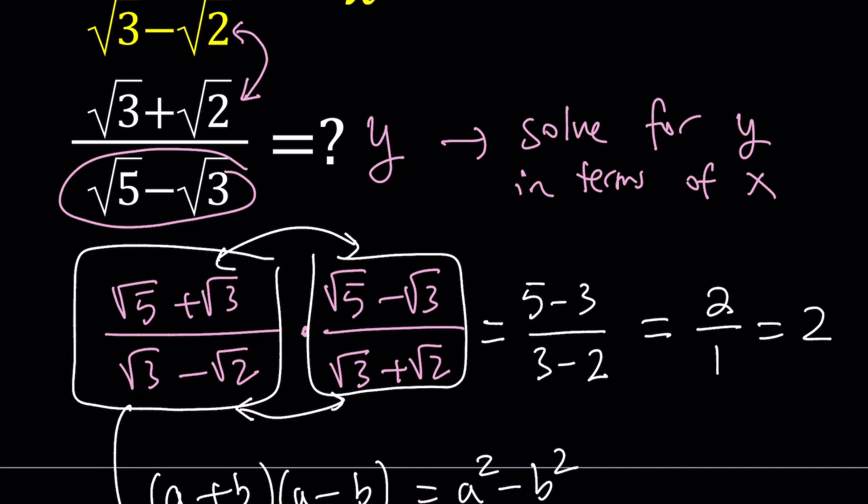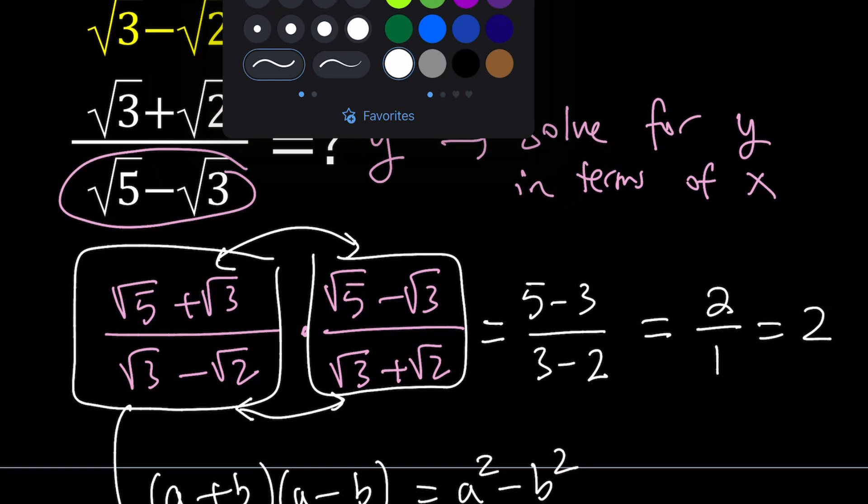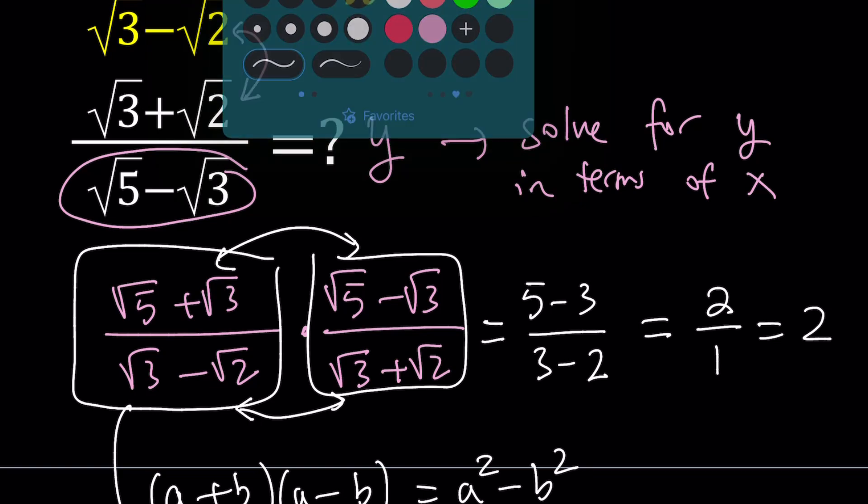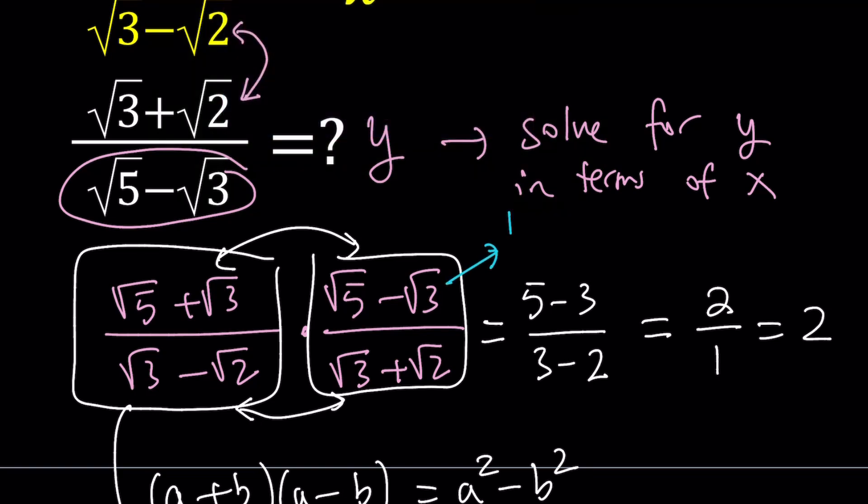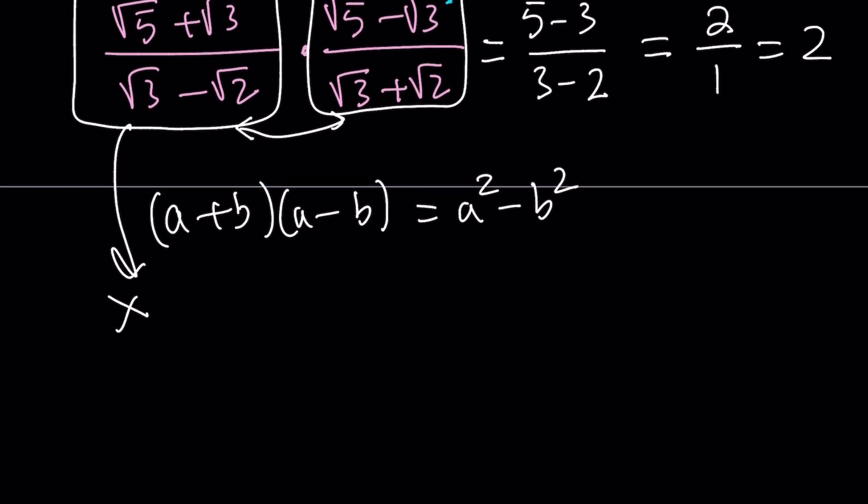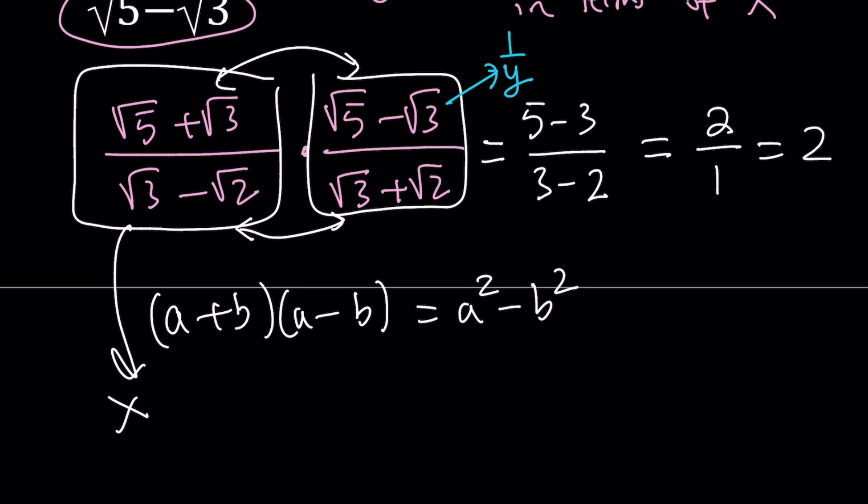But if you look at the second expression, it's not y. You know why? Because look at the numerator and denominator. They're not the same, but it's just actually flipped. So this is the reciprocal of y, which I can write as 1 over y. Here's the result: x multiply by 1 over y equals 2.